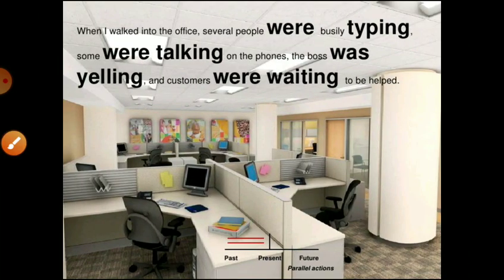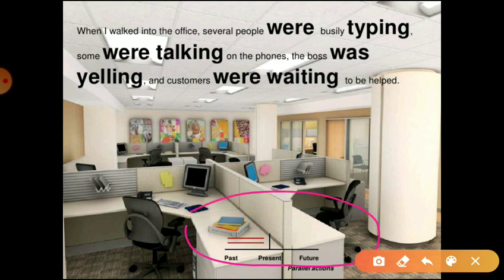Another use is parallel action, where all actions were moving simultaneously with no interruption — and so we use only past continuous throughout. For example: 'When I walked into the office, several people were busily typing, some were talking, the boss was yelling and shouting, and the customers were waiting.' All these are parallel actions in the past. This is a further division of past continuous that many haven't considered before.